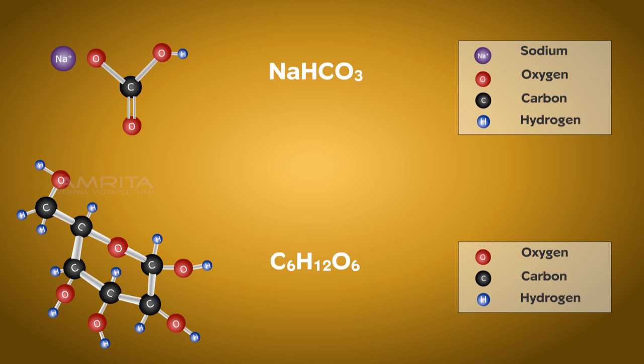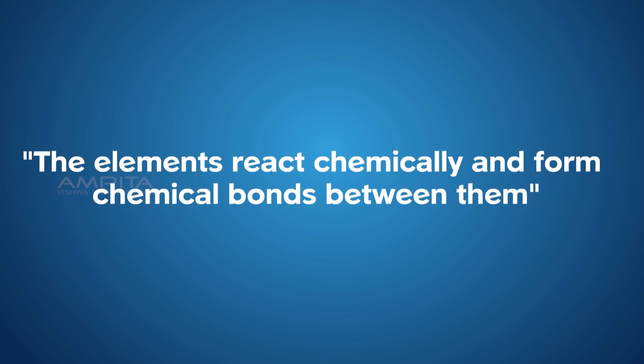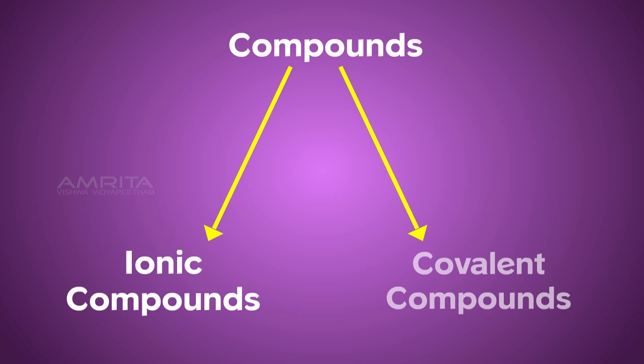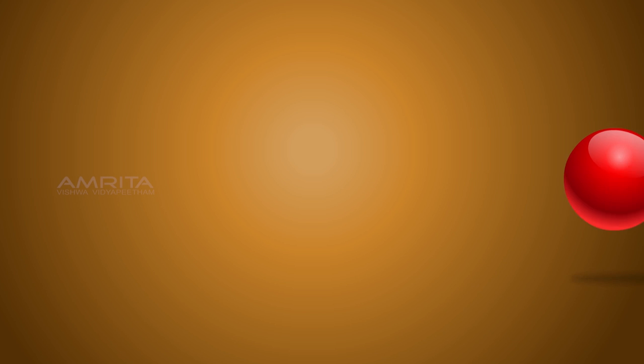The properties of a compound are different from that of its component elements. The elements react chemically and form chemical bonds between them. Based on the nature of the bonds, compounds can be classified into ionic, molecular, or covalent compounds.